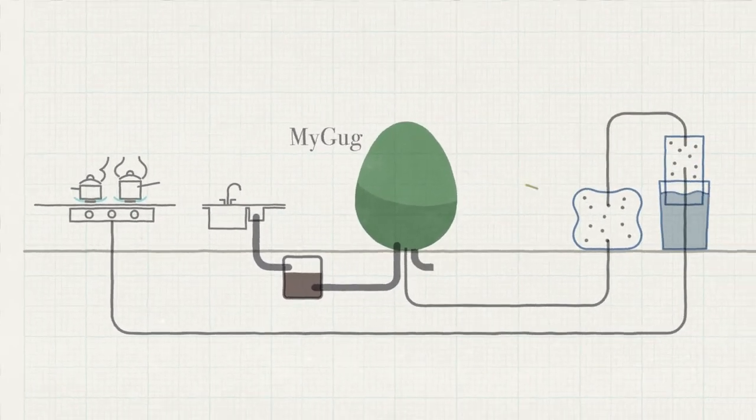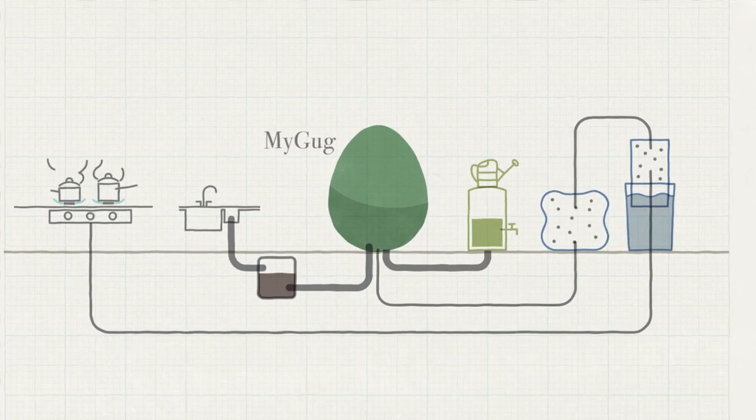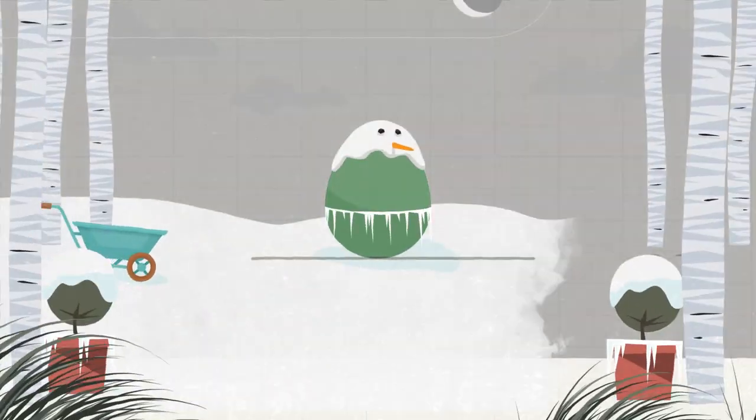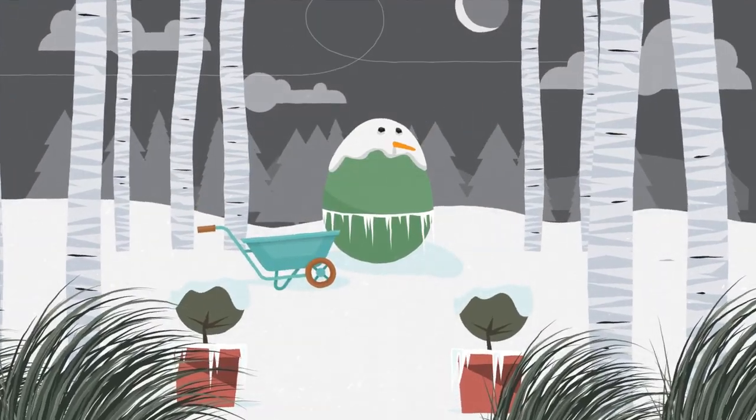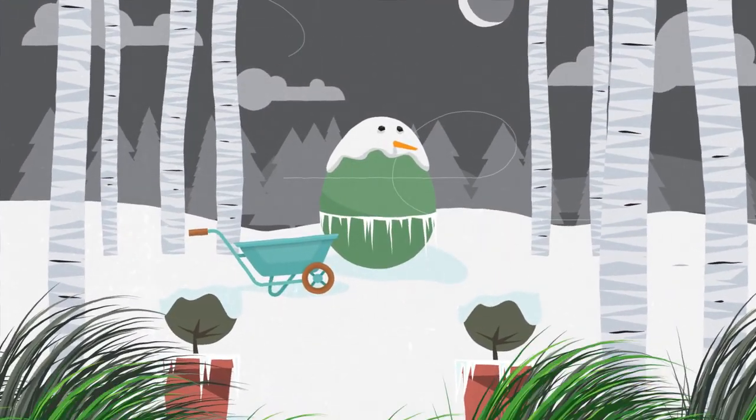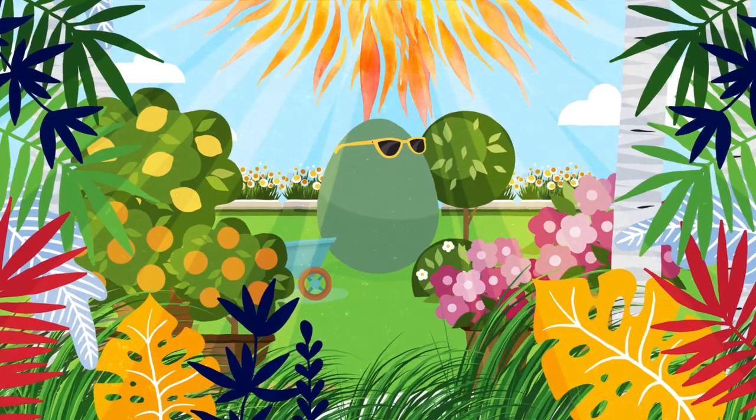A nutrient-rich solution is stored for use as a plant biofertilizer. The MyGug system will work in all climates, from the extreme cold winters of northern Norway to the searing summer heat of southern Spain.